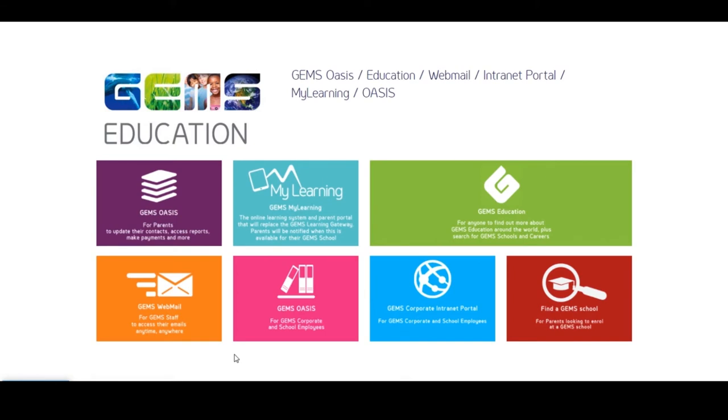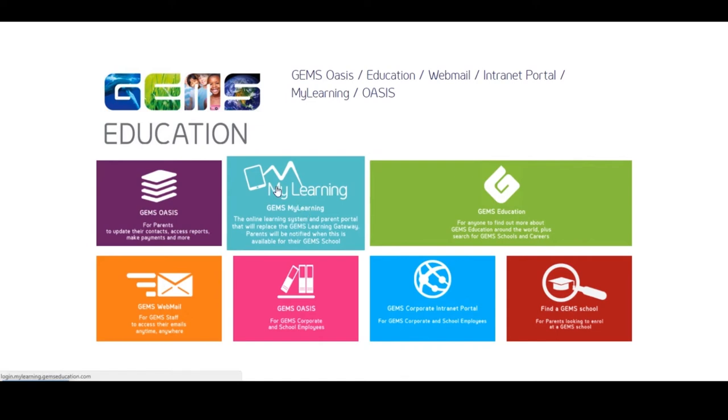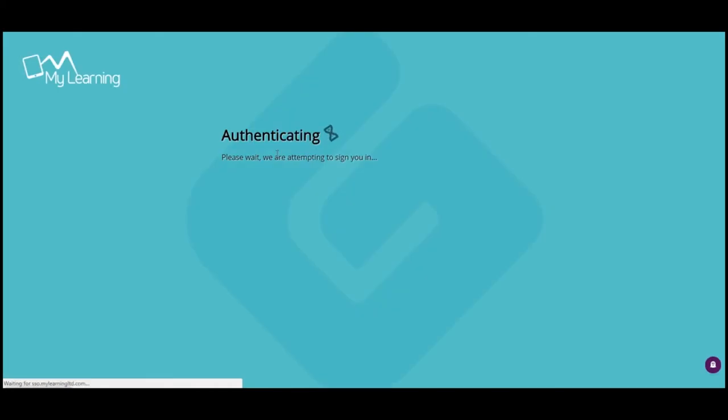From the main GEMS.AE webpage, click on the MyLearning light blue box and then log in using your parental portal login details. If you do not have your MyLearning login details, please contact your child's year leader and they will pass these details on to you.